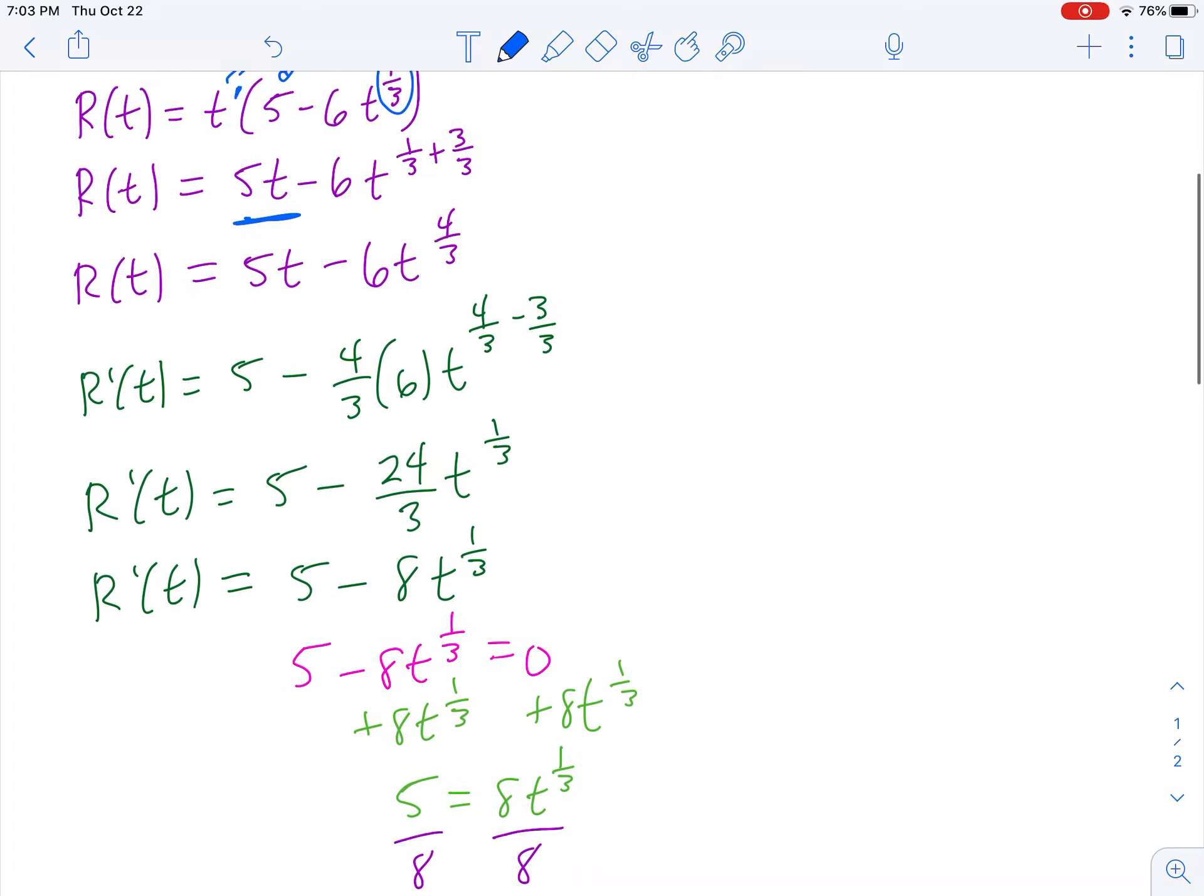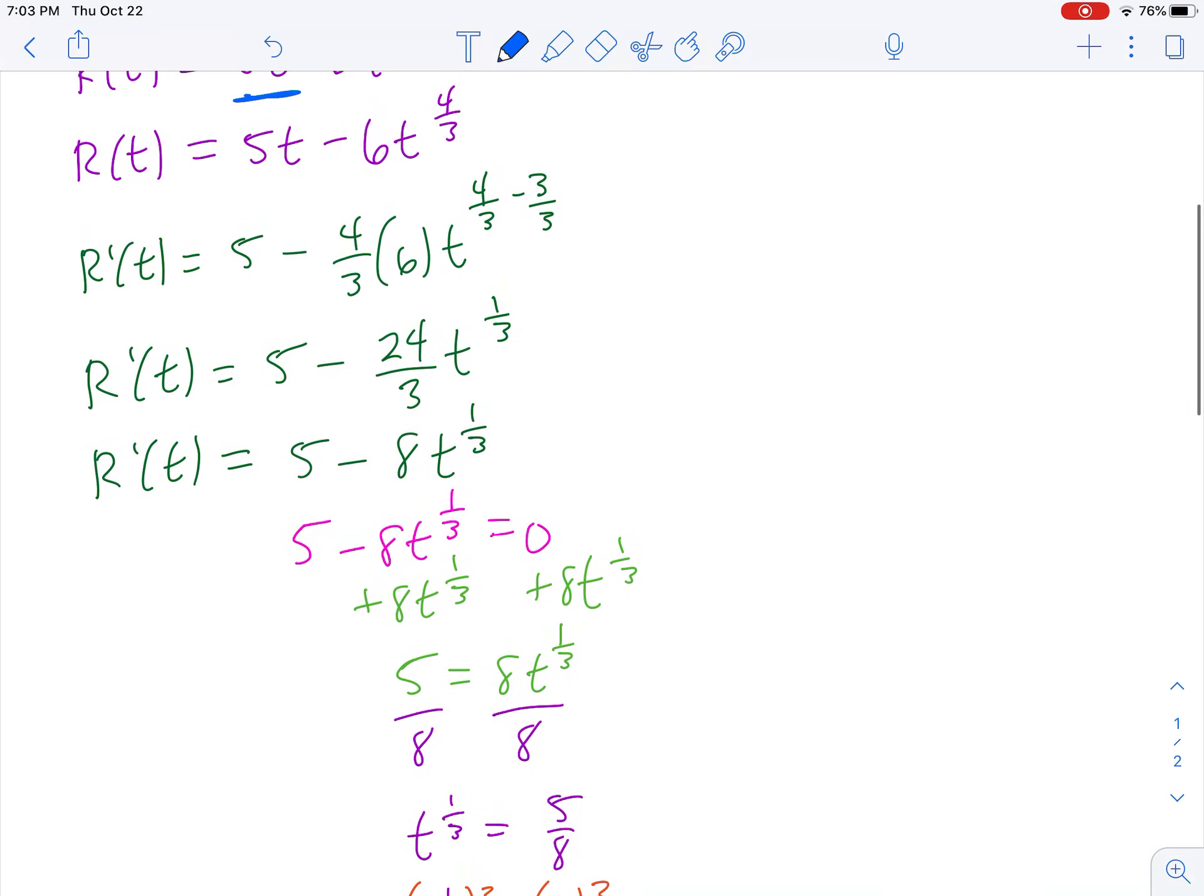Now that we have revenue, we can find the derivative. The derivative of 5t is just 5, and the derivative of negative 6t to the four-thirds power: I hang on to my minus sign, then I bring down the exponent, four-thirds, make a product with the 6. So four-thirds times 6, and I lower the exponent by 1, which is the same thing as lowering it by 3 over 3.